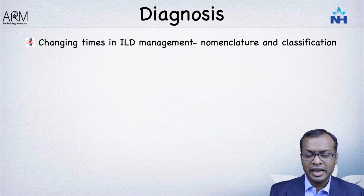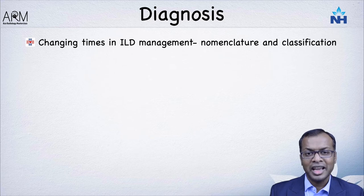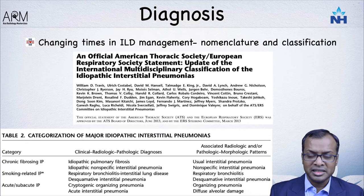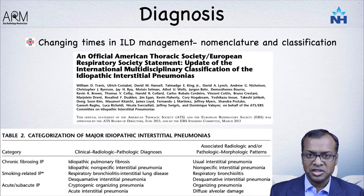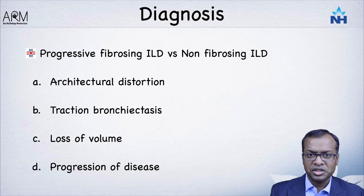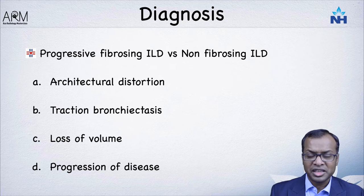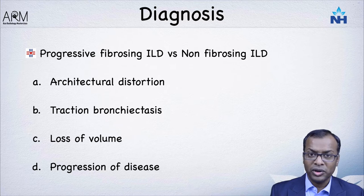There are changing times in ILD management, especially in the nomenclature and classification of interstitial lung disease. The 2013 standard classification divided ILD into chronic fibrosing interstitial pneumonias, sub-acute or acute interstitial pneumonias, and smoking-related ILD. Now it is more useful to differentiate ILD into a fibrosing or non-fibrosing variety. Fibrosing varieties show traction dilatation of bronchi, architectural distortion, and loss of volume, and they progress over time.